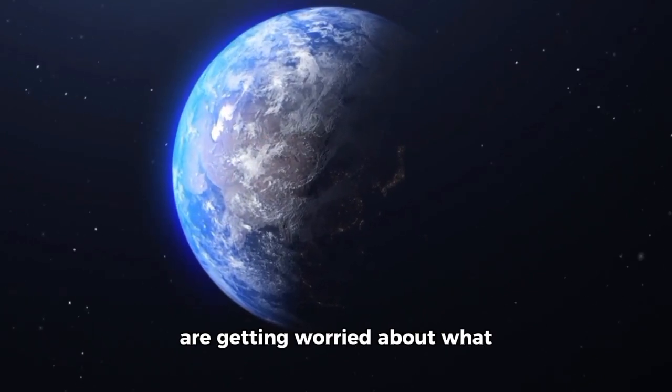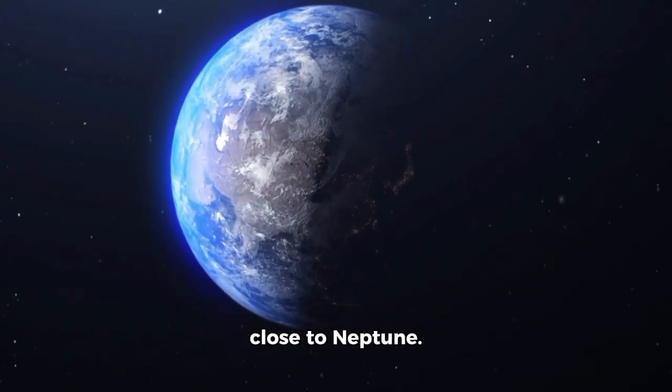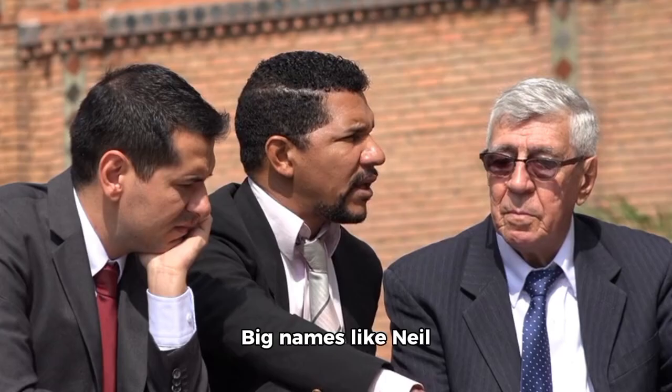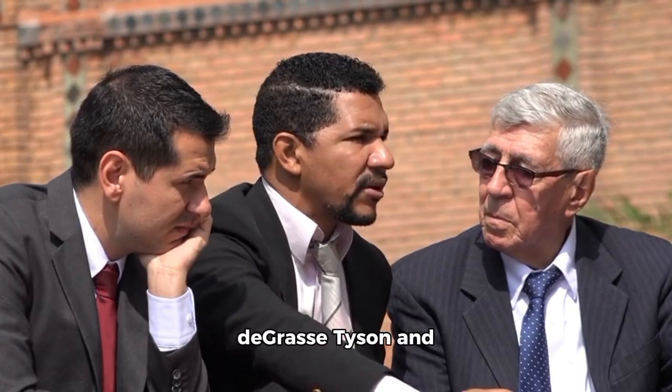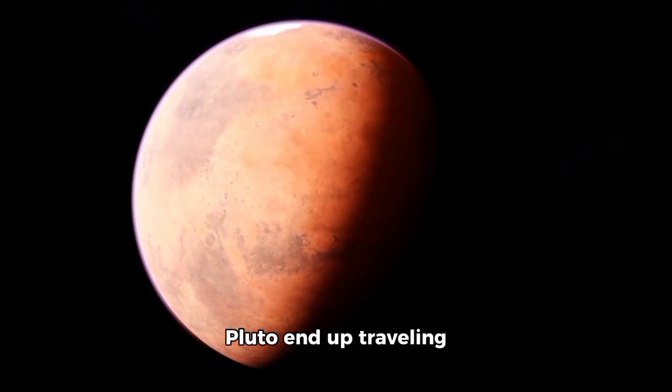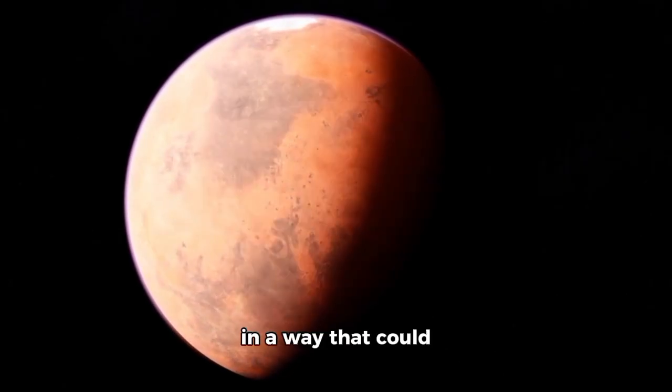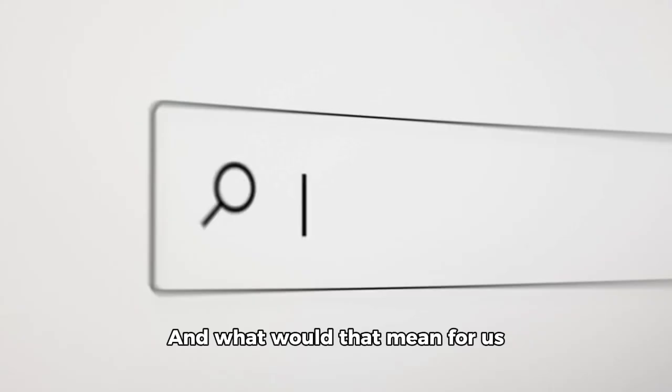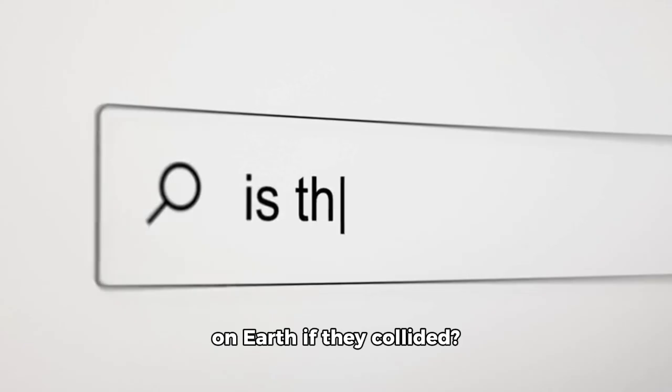Astronomy fans are getting worried about what might happen if Pluto gets too close to Neptune. Big names like Neil deGrasse Tyson and Michio Kaku are worried. Therefore, how did Pluto end up traveling in a way that could cross Neptune's orbit? And what would that mean for us on Earth if they collided?